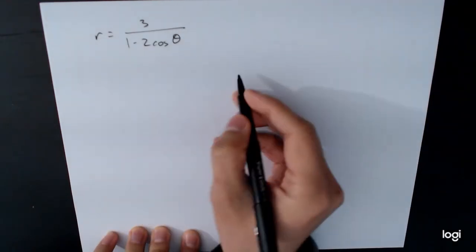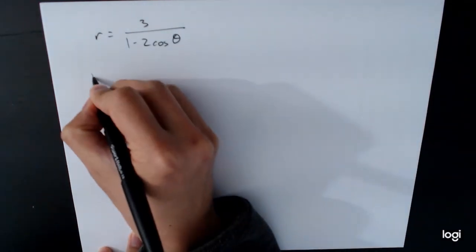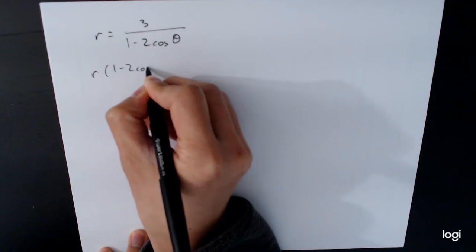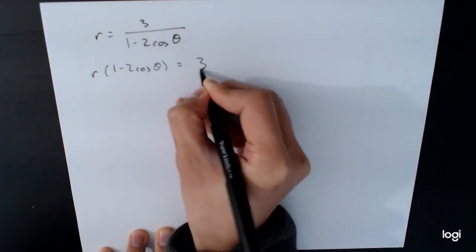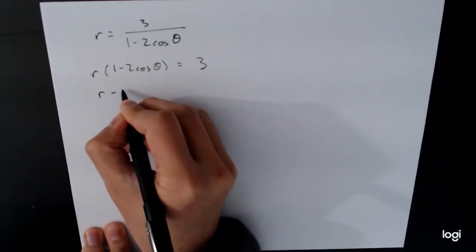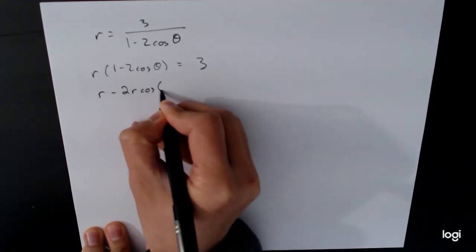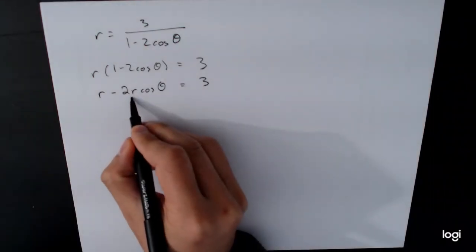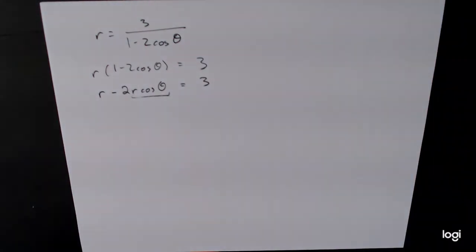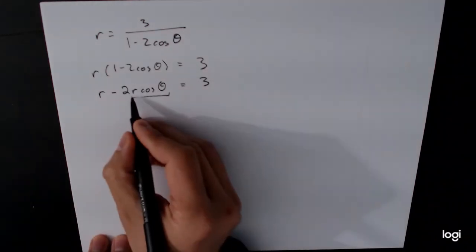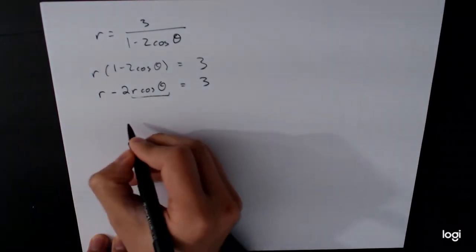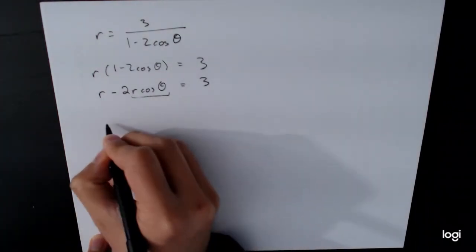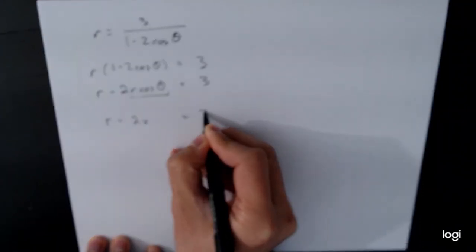So with this type of equation, what we're going to do is we're actually going to clear the fraction and distribute. The reason why we want to do this is that this allows us to see this term right here. This is one of the two formulas for converting between polar and rectangular coordinates. This is in fact just an x. And so what we have is we have r minus 2x is equal to 3.